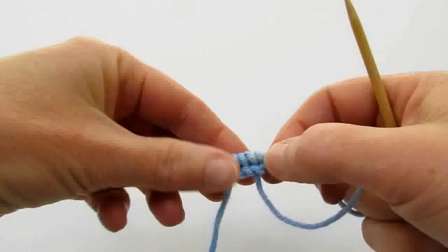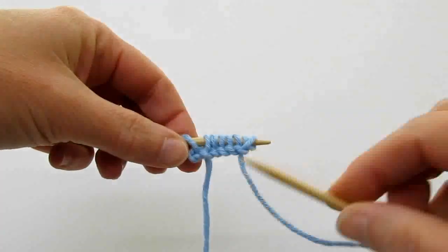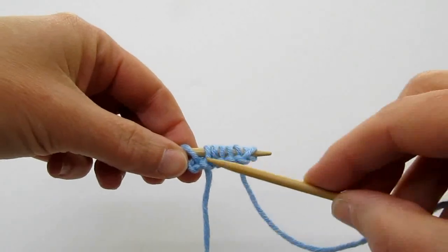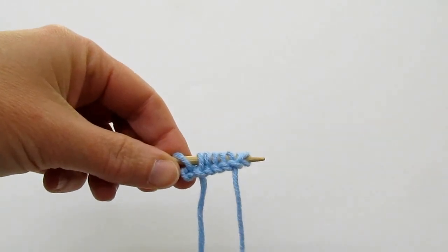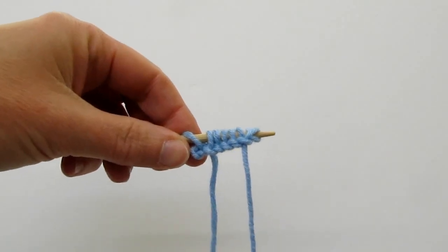Now why would you do a cable cast on rather than a knitted cast on? I think it's because of the edge. It looks a lot nicer than the knitted cast on, so it's my preference if I have a choice between the two. Thank you.